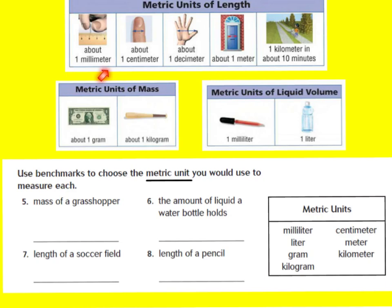A decimeter is about the width of your hand. One meter is very similar to one yard and is about the width of a door. And one kilometer — you can walk one kilometer in about ten minutes, which tells us that one kilometer is about half of a mile, because remember, we can walk a mile in about 20 minutes.